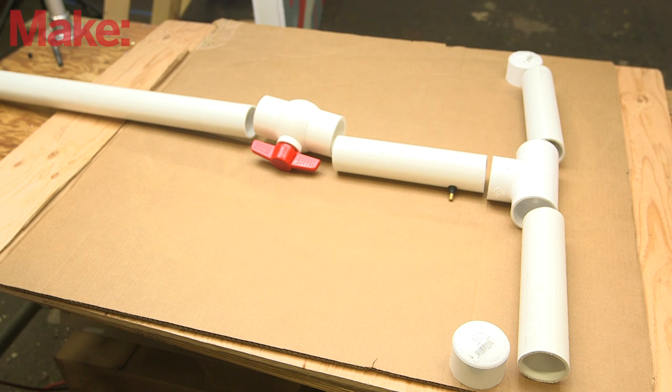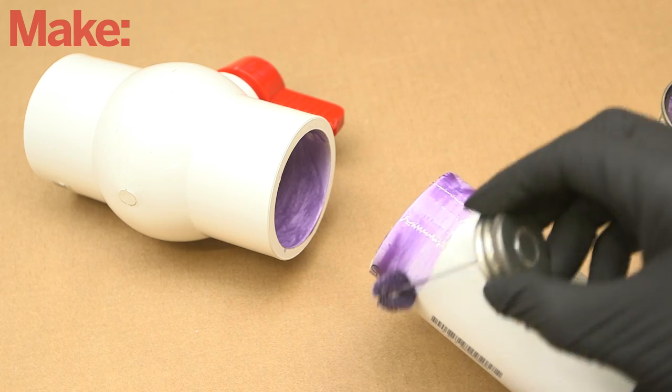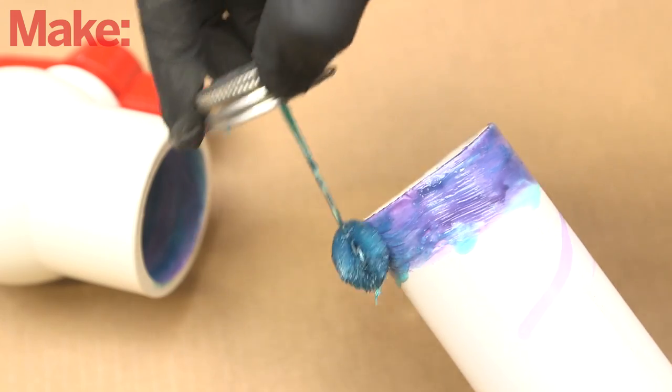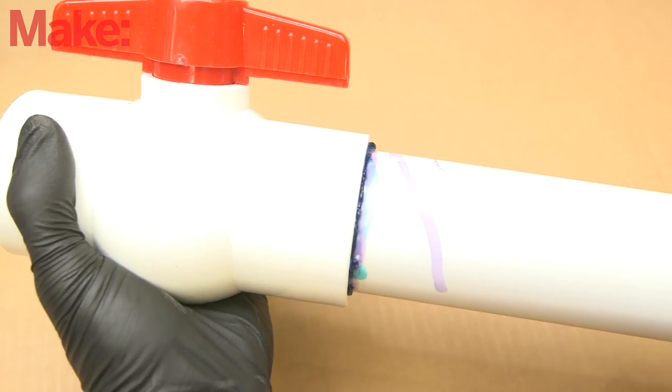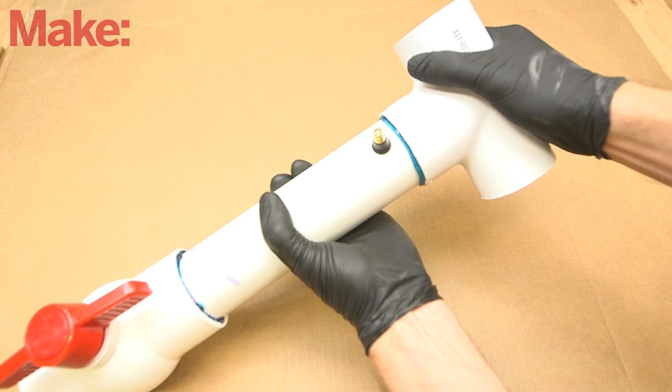Before gluing, lay the parts out in their final configuration. Apply the purple primer to both the outside of the pipe and the inside of the fitting. Give it a few seconds before coating both surfaces with the cement. Quickly insert the pipe into the fitting, press them together, turn the fitting a quarter of a turn, and then hold it in place for 15 seconds. Repeat the process for each connection.